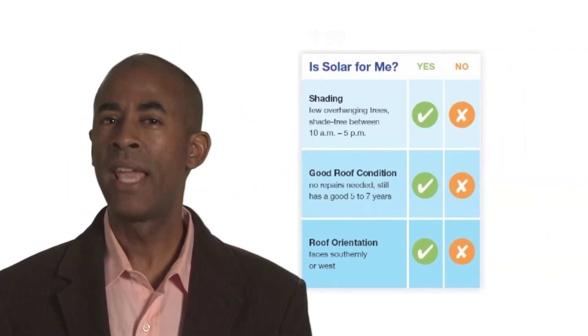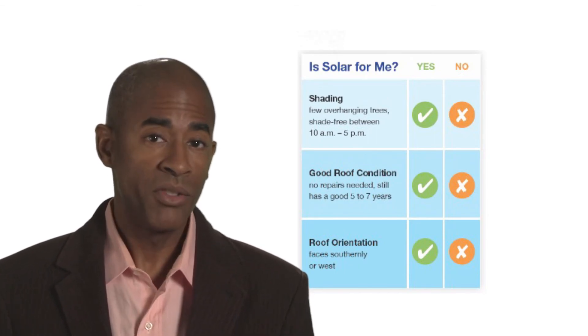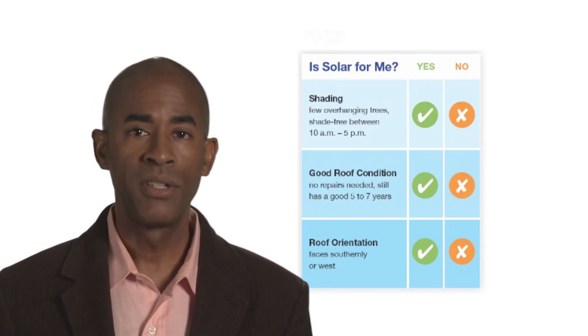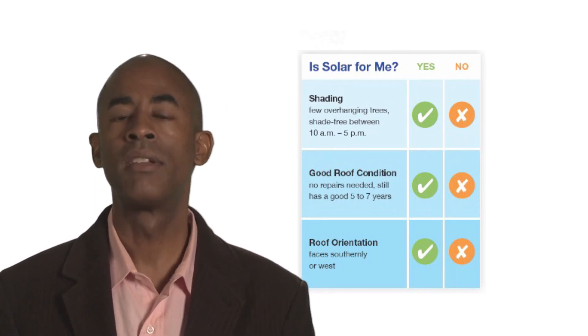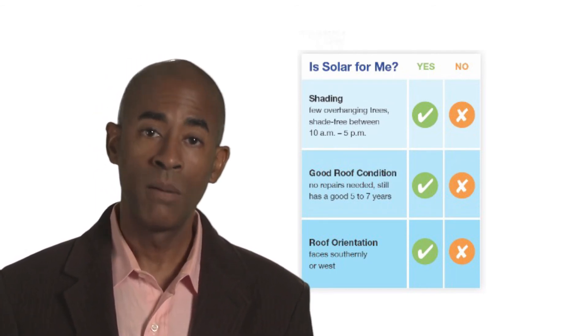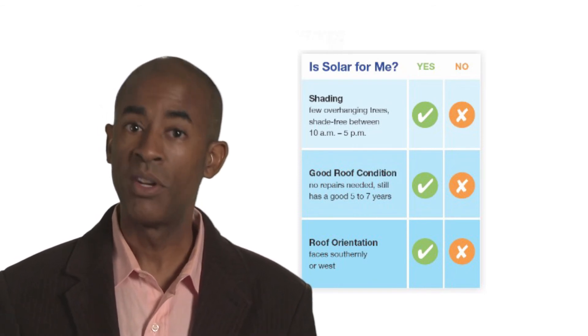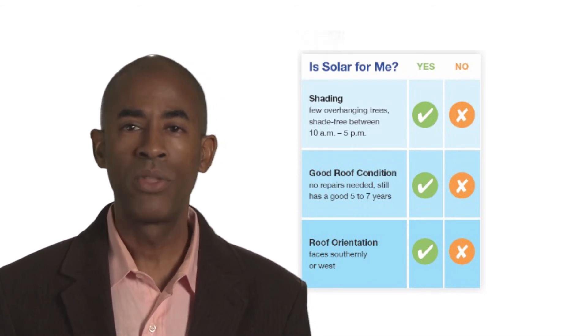So to determine if you're a good candidate for DG, what must you consider? First, determine if you are a good candidate for solar panels through a quick housing checklist. If you aren't, some utilities offer shared community solar. Check with your local utility.